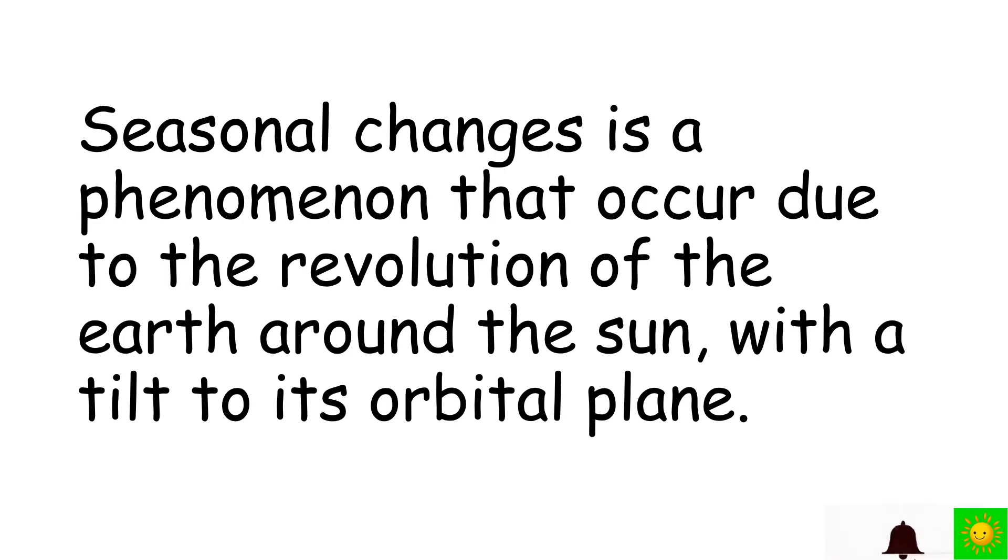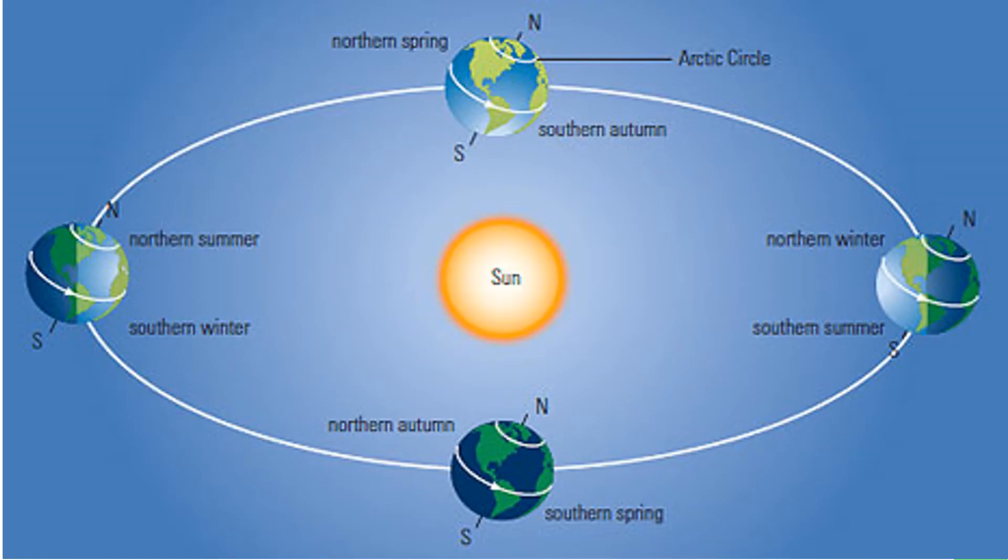Let us find out how this happened. It is known that the Earth's axis has a tilt of 23.5 degrees to its orbital plane. Revolution of the Earth with this tilt is the reason for seasonal changes on the Earth. Now let us study about how this happened. Now you can see the occurrence of seasonal changes on the Earth.